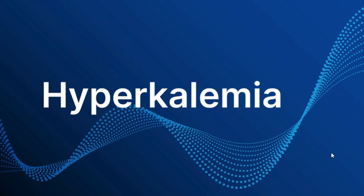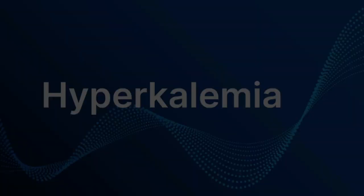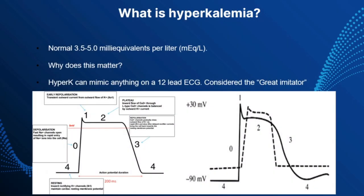Hello everybody, my name is Matt and here we're going to be talking about my most favorite thing in electrophysiology: hyperkalemia. The normal potassium is 3.5 to 5 milliequivalents per liter. Anything over that is obviously hyperkalemia.